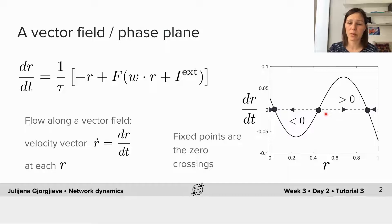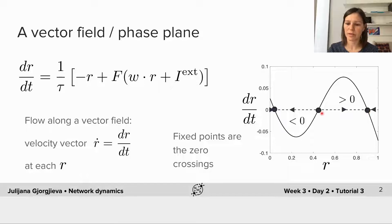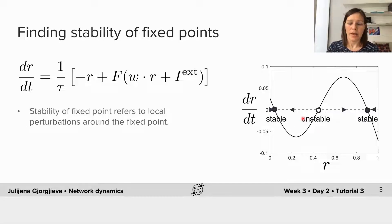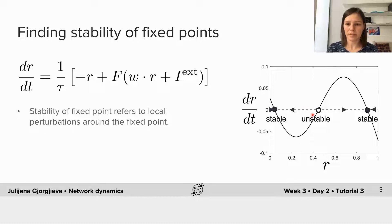We also define the fixed points of the dynamics by setting the derivative dr/dt equal to zero. So we got the entire expression on the right hand side, and graphically to visualize where these fixed points are, we simply had to see where this curve intersected the dashed line indicating zero. The fixed points correspond to these gray circles where exactly the zero crossings of this function are.